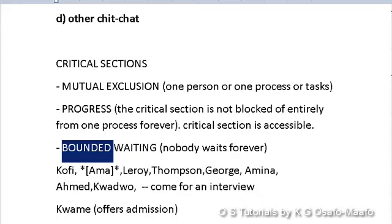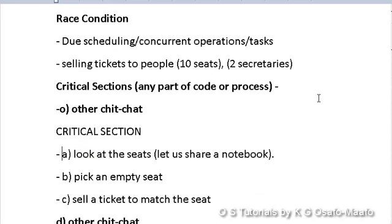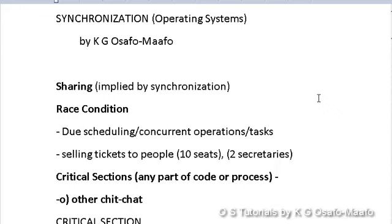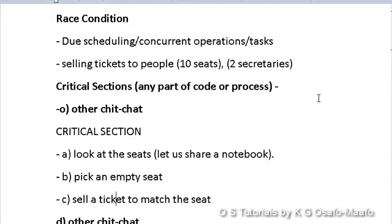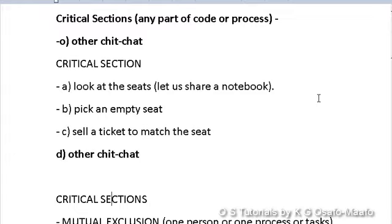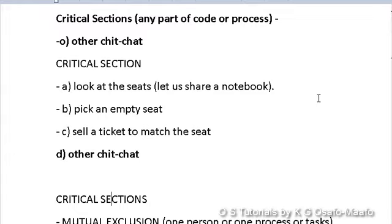So for any critical section, the properties we want are: mutual exclusion — only one person enters at a time; progress — people get to enter the critical section; and bounded waiting — someone who has been told to wait doesn't wait forever; their time is bounded. In the next section we'll talk about strategies and algorithms that can guarantee the critical section works. To summarize: race conditions occur when things compete for shared resources and produce unexpected results. The critical section is the part of code where only one process can be active, with the properties of mutual exclusion, progress, and bounded waiting.